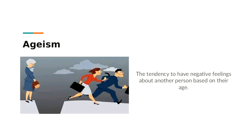Ageism can go both ways — you might think an older person doesn't know anything or hasn't progressed, and conversely that a younger person doesn't have enough experience. With technology increasing, there's a tendency to favor younger generations when hiring, assuming an older person can't keep up with new technology.